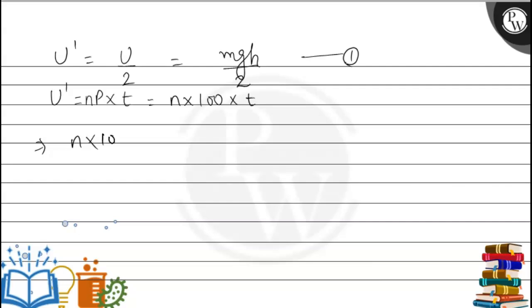Now we put both these values in the equation. n×100×t equals mgh/2. From here the value of n becomes mgh divided by 2×100×t.